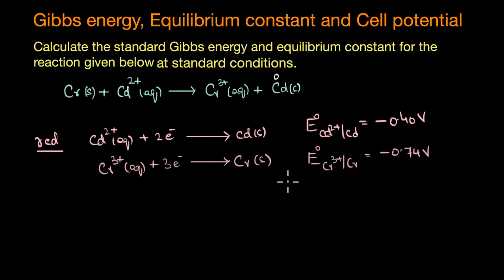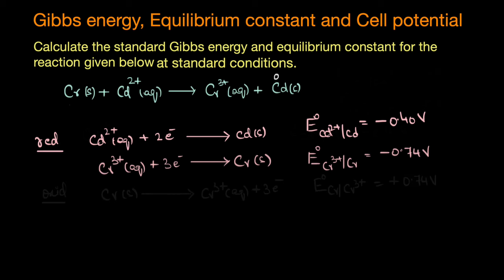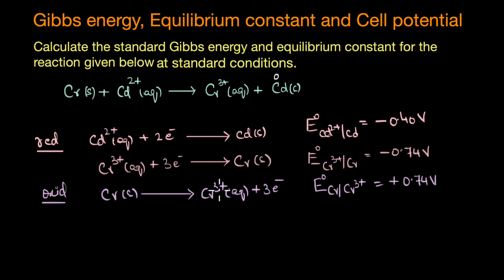There is a small problem: this is a reduction reaction, whereas in our reaction chromium is undergoing oxidation. So we have to reverse this half reaction. The oxidation half reaction is the reverse of the reduction reaction, giving us the oxidation potential, which is exactly the negative of the reduction potential.